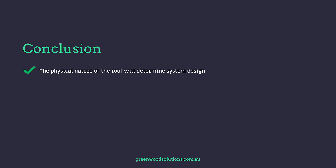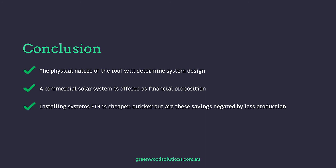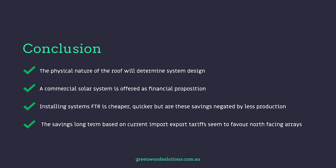In conclusion, the physical nature of the roof will determine system design. A commercial solar system is offered as a financial proposition. Installing systems flat to the roof is cheaper and quicker, but are these savings negated by less production? The savings long term based on current import and export tariffs seems to favour north-facing arrays. Thanks for watching — if you have any questions or inquiries, please contact us and hit the subscribe button.